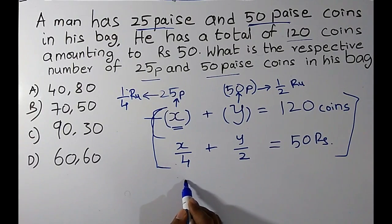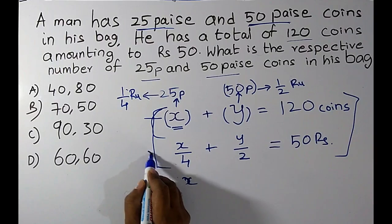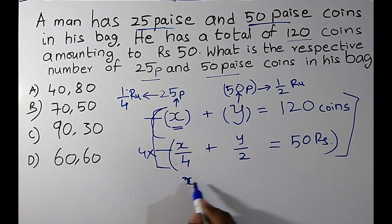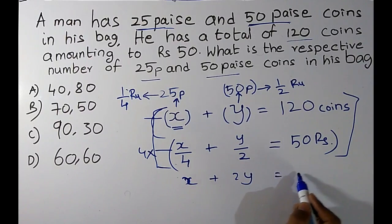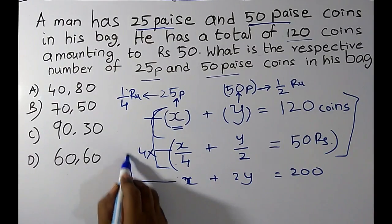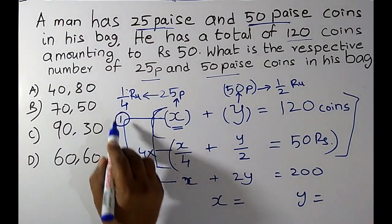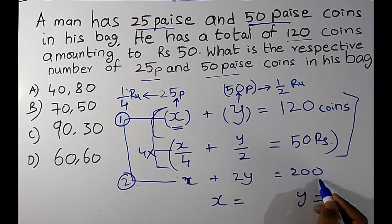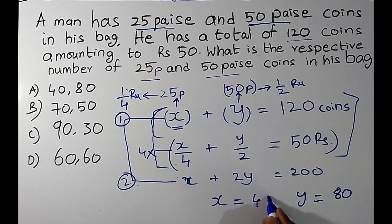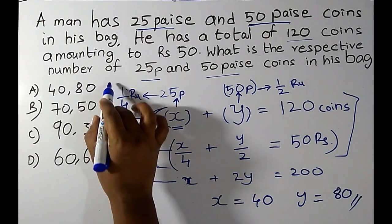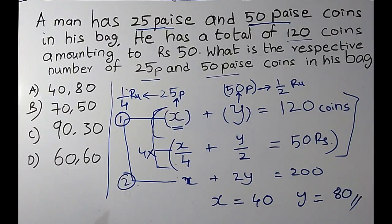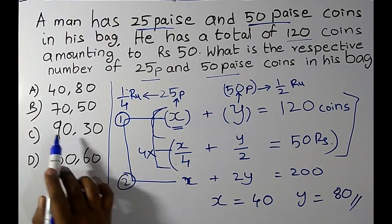Multiplying the value equation by 4 gives: X + 2Y = 200. By solving this with the first equation (X + Y = 120), and subtracting, we get Y = 200 − 120 = 80. Then X becomes 40.